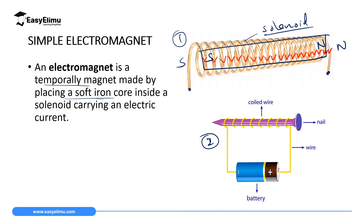In diagram 2, we have an iron nail inserted inside the solenoid. A battery is supplying direct current flowing from the positive terminal to the negative terminal. To determine the polarities of the magnet formed on this nail, we grasp the conductor such that the fingers point in the direction of current — in front the fingers point down — then automatically this end becomes north pole where the thumb points, and the other becomes south pole.